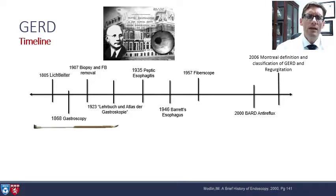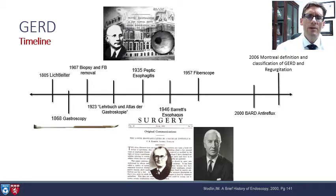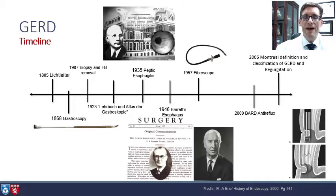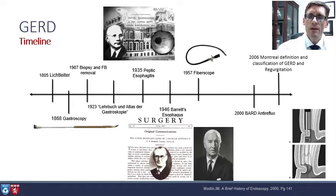Shortly after this, in 1946, we have the description of Barrett's esophagus, initially by Dr. Philip Roland Allison, who is a professor at the University of Oxford, and is subsequently named after Dr. Barrett. Then in 1957, we have the fibroscope developed, and then in 2000, the Bard anti-reflux device, in part due to efforts by Paul Swain and Pete Lucan. And then in 2006, we started to have some more clinical developments in the Montreal definition and classification of GERD regurgitation.